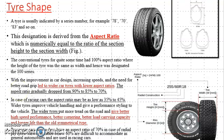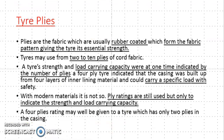Now we are going to discuss the different types of plies used in manufacturing a tire. Different types of plies are required during manufacturing, and based on the arrangement of these plies, tires are classified. The plies are fabrics that are usually rubber coated — either natural rubber or synthetic rubber — which form a fabric pattern giving the tire its essential strength needed to carry the load of the vehicle and passengers.